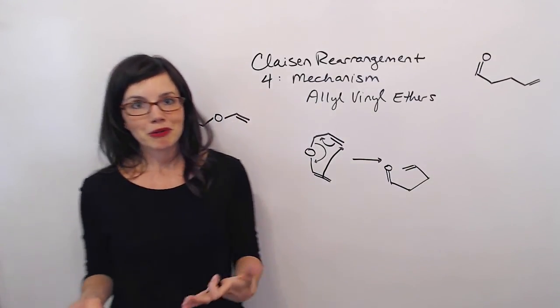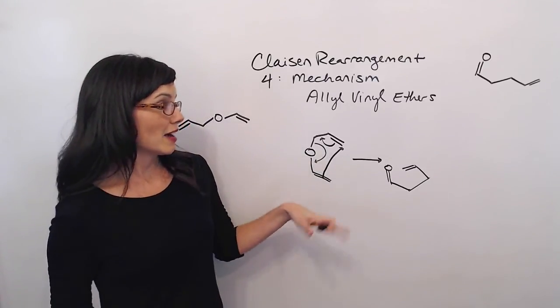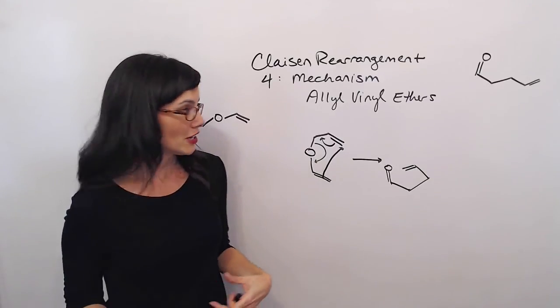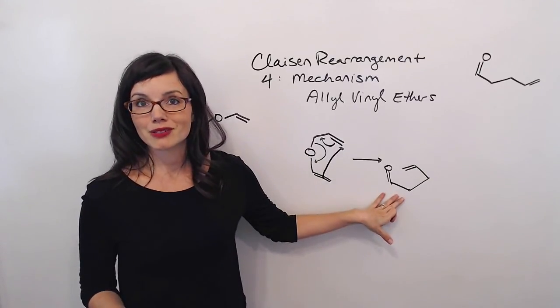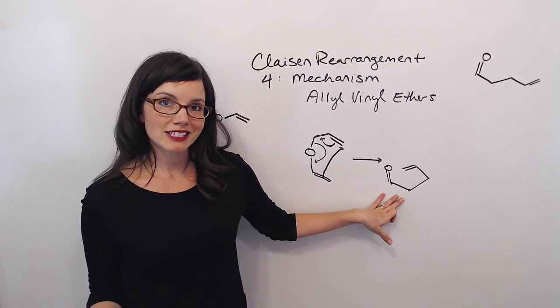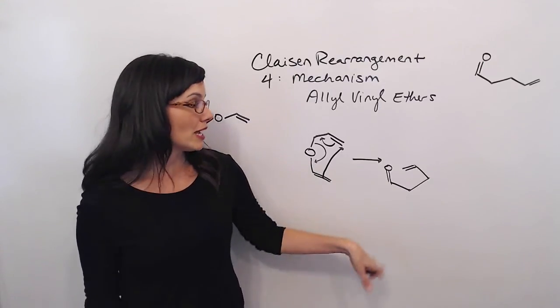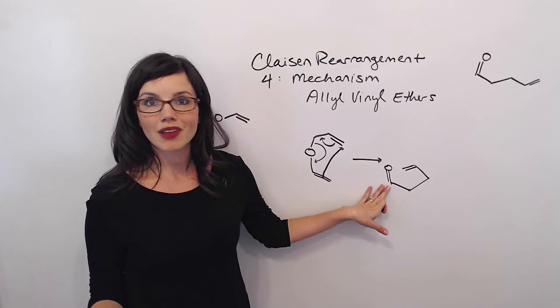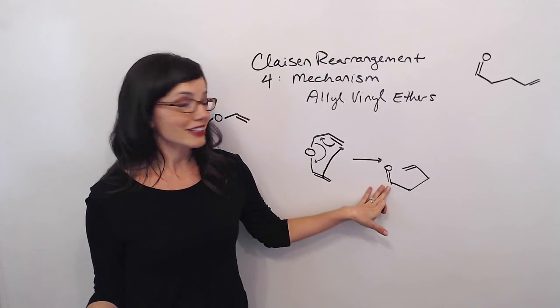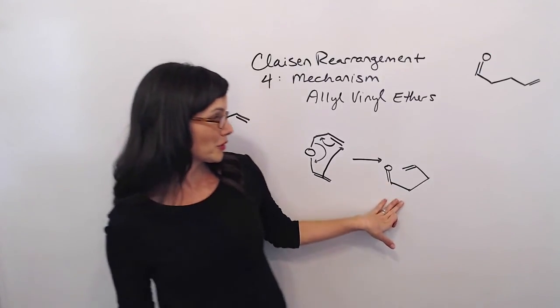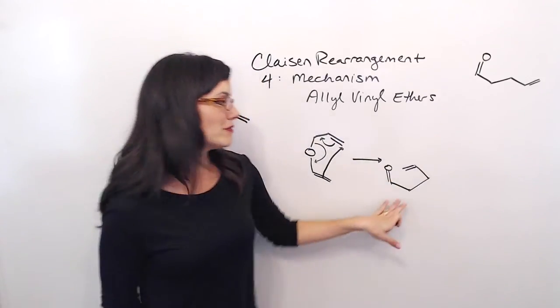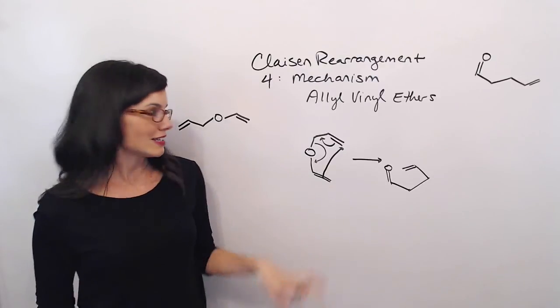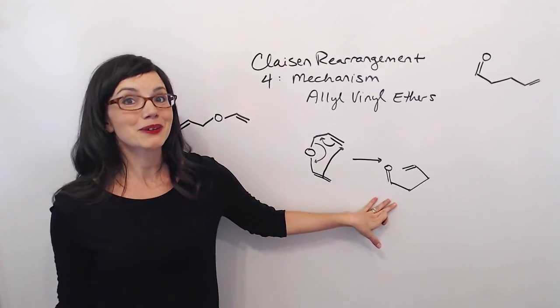Now you may recall that after this step when we did the allyl phenyl ethers, the aromatic substitution, we had a problem because we had to restore aromaticity to a benzene ring and we had to take this carbonyl and turn it back into an alcohol. We don't have that problem here. We have a perfect final product. We've done our last step. So the great news about this mechanism is that this is all we have to do. We're totally done.